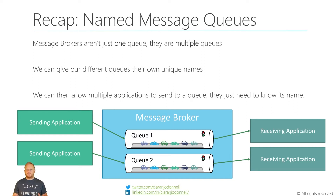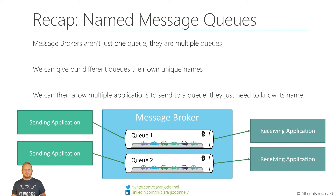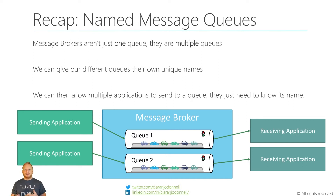We said that a message broker can have multiple different queues — we give them unique names — and the sending application can send messages to that queue, they line up in that queue, and then receiving applications can connect to those queues and receive the messages from them, and they'll come in the same order they were sent.